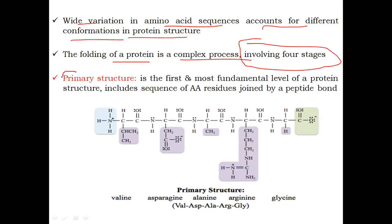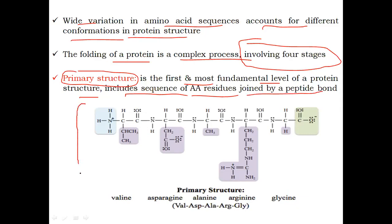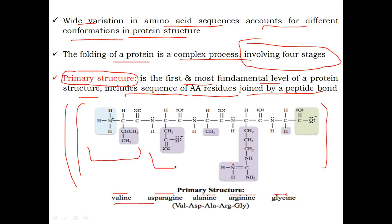The first stage is the primary structure — the first and most fundamental level of protein structure. It simply includes the sequence of amino acid residues joined by peptide bonds. In the figure, five amino acids are shown: valine, asparagine, alanine, arginine, and glycine, representing the sequence of amino acid residues.